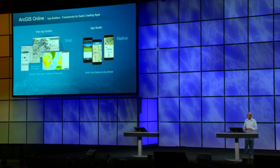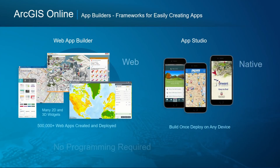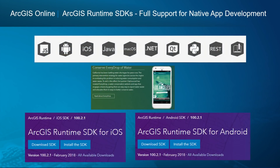ArcGIS Online also includes app builders that allow you to easily create applications — the Web App Builder, which is extremely popular, as well as App Studio, that lets you create mobile apps, build once, and deploy on any device as native applications. In addition to the JavaScript API, ArcGIS Online includes the runtime APIs for building native apps on iOS and Android. These are also part of the platform.